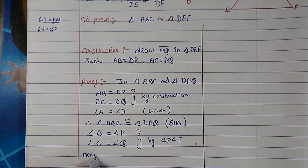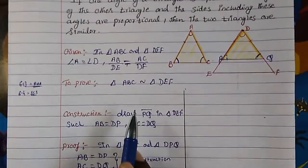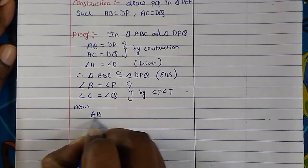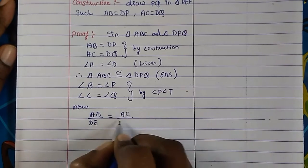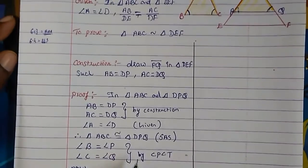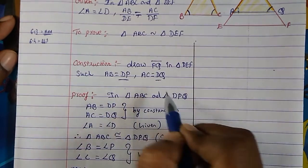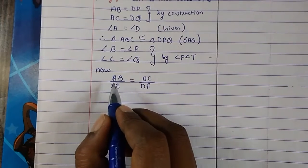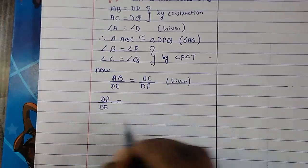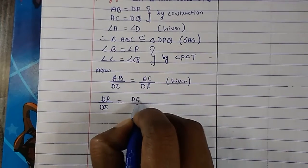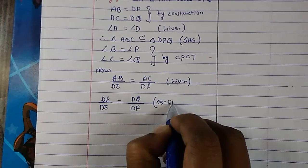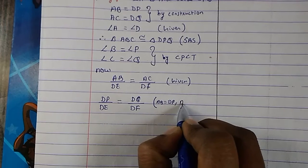Now, what is given to us is AB upon DE equals AC upon DF. Since AB equals DP and AC equals DQ by construction, we can substitute and write DP upon DE equals DQ upon DF.